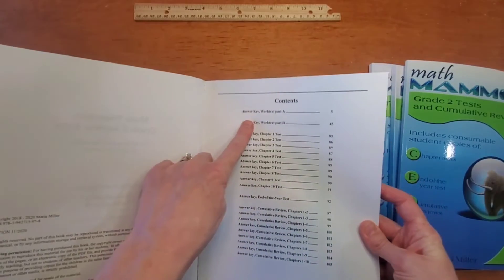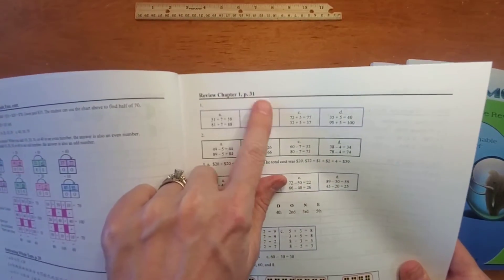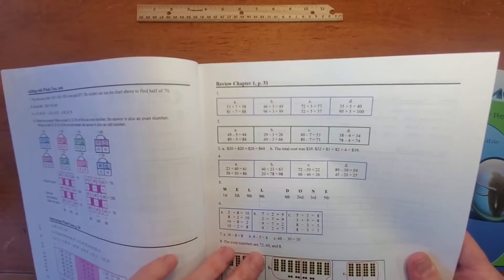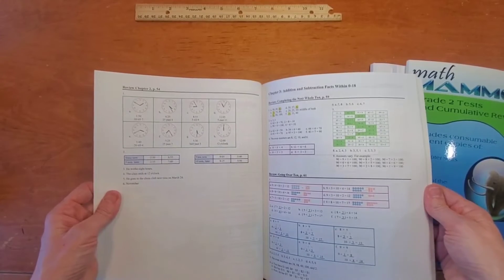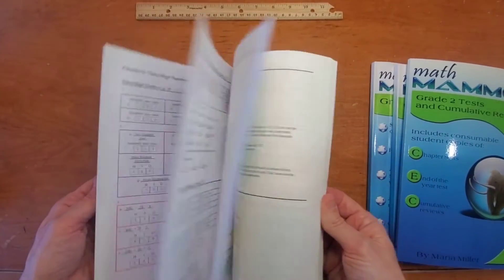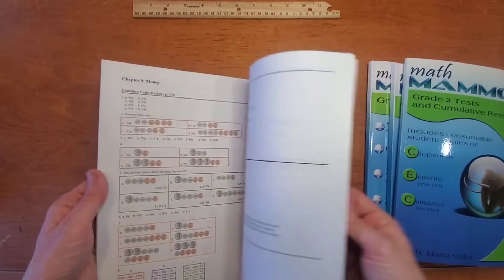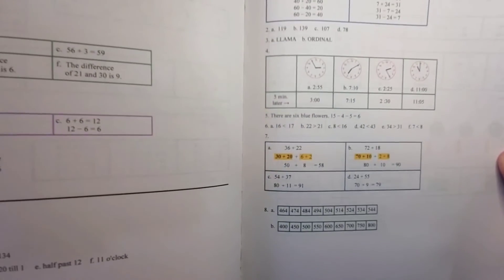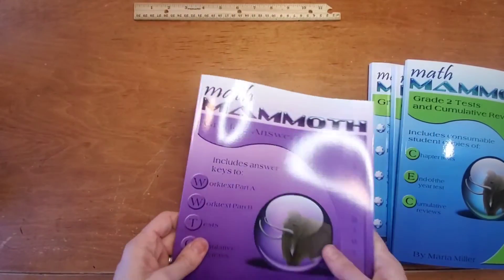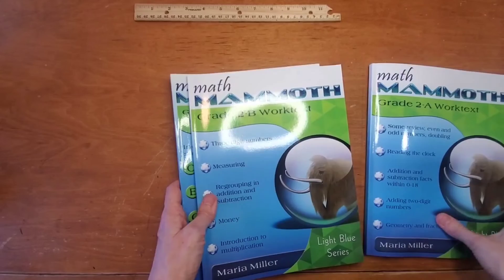This is the answer key. So it has the answer key for all the worktext books, A and B. Very easy to follow. It shows you the page number, what you're doing, the title of it, and then the page number, and then it goes right through the answers for that section. And then it also covers in the back the B worktext, and then it gets into the testing book that I just showed you and the cumulative reviews. So for their testing, those answers are also back here, and the cumulative reviews. But I didn't feel that I needed this for grade two, possibly for grade three. I guess it depends on how much figuring you want to do in your own head or not, or how much time you have for it too.